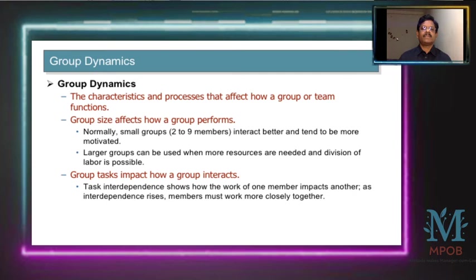Group dynamics refers to the characteristics and processes that affect how a group or team functions, because group behavior affects group activities and jobs. Group size especially affects group performance, and group tasks impact how a group interacts. The tasks of each individual, their performance, group relations, and group activities are all interrelated and interdependent.